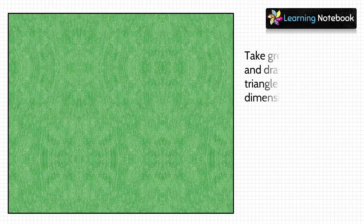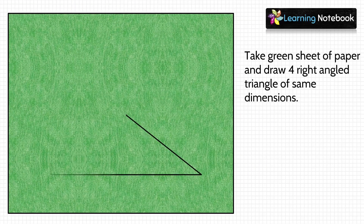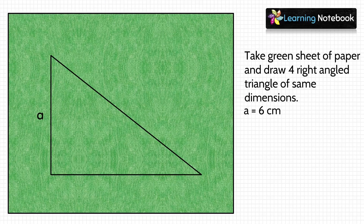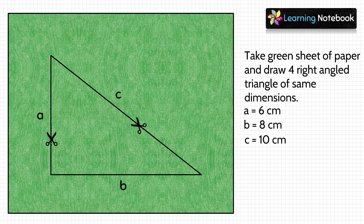Now in the next step, take a green colored sheet and draw four right angle triangles of the same dimensions, then cut out these four triangles.